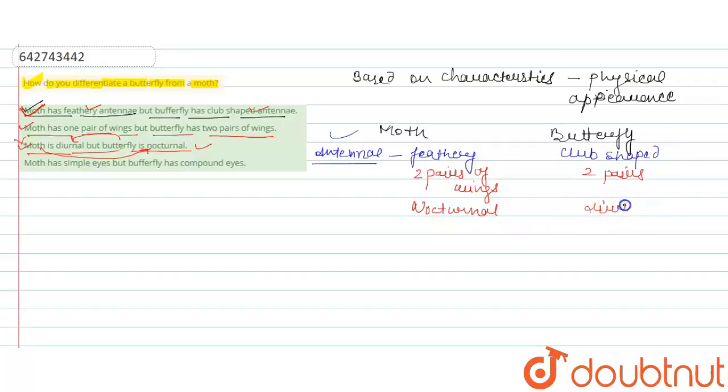Butterfly is diurnal. Okay, so the last option is: moth has simple eye but butterfly has compound eye. This option is also incorrect because both moth and butterfly are insects, and all insects have compound eyes.